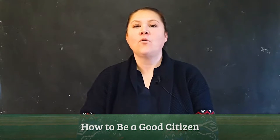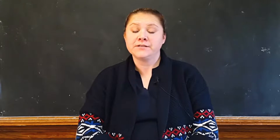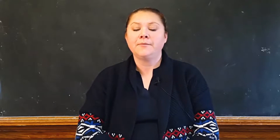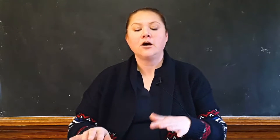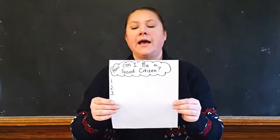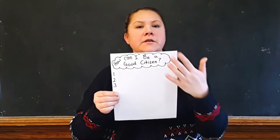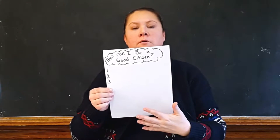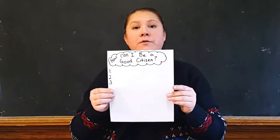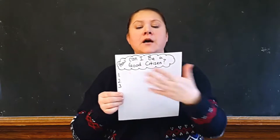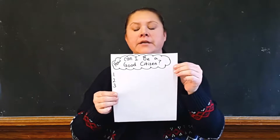Hi. Today I'm going to talk about one way I teach social studies to my kindergarten students. I'm going to work on a citizenship lesson and our topic would be how can I be a good citizen. So you can either do this on a chalkboard or a large piece of paper is preferable, or a large dry erase board, and at the top I have 'how can I be a good citizen' written down.